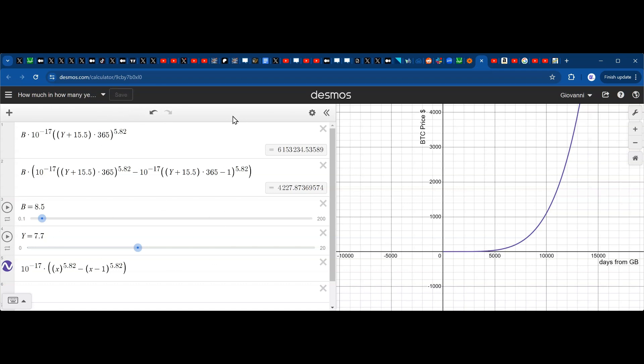Basically what do we have here? We have B, which is the number of bitcoins that you own. Y represents the number of years in the future because we start from the Genesis block, and we have about 15.5 years from the Genesis block.